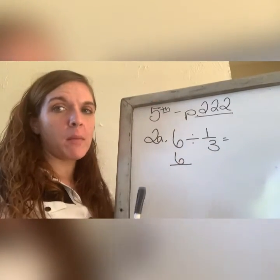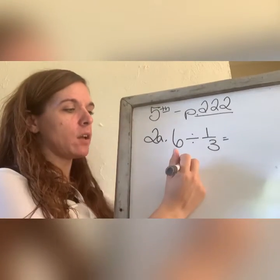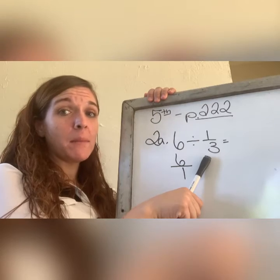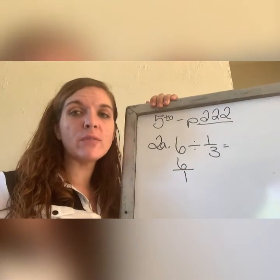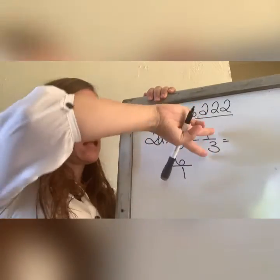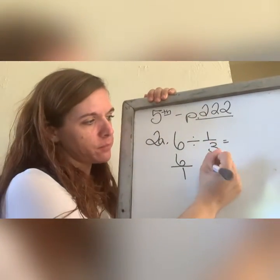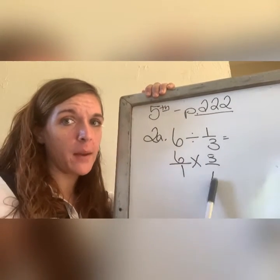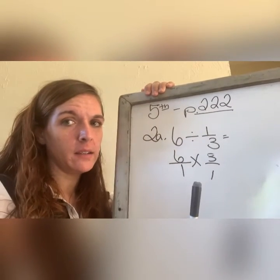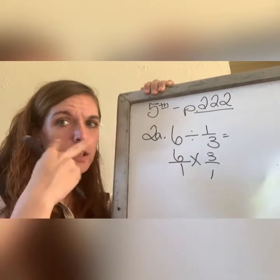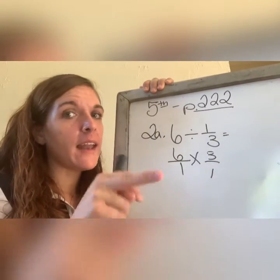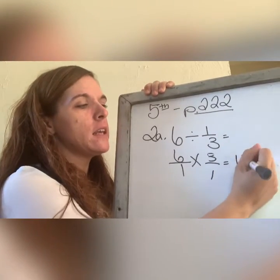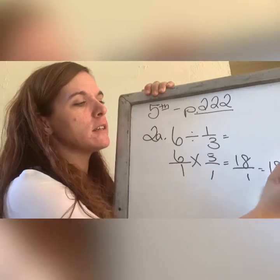Put what on the denominator, Mario? The one, okay. Then what you're going to do with this one is flip flop and multiply. The way that you divide fractions is you take this and flip flop it and multiply. Flip flop and multiply. Now we finish. Six times three is what, Adia? Eighteen. One times one is one, so now our answer is eighteen.